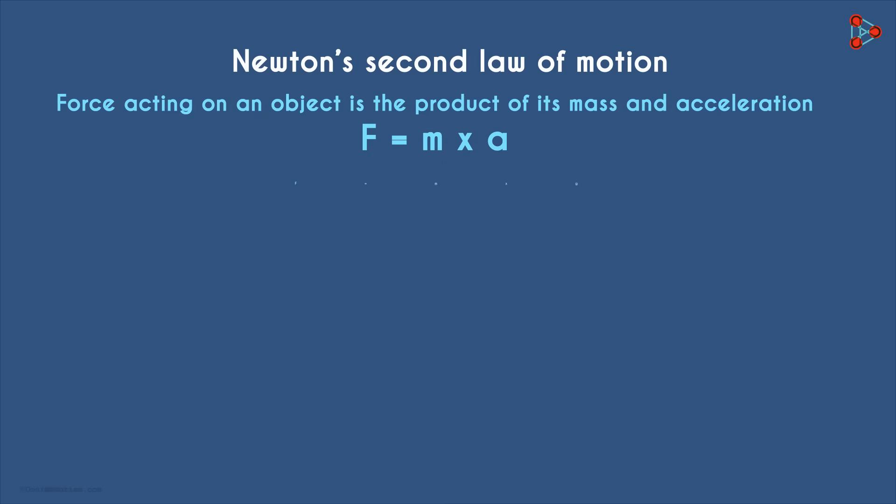When it's acceleration due to gravity, we can replace A with a lower case g. This force due to gravity is nothing but the weight of the object. So if we consider the weight of an object to be uppercase W, we can rewrite this equation as W equals M times g. So the weight of an object is the product of its mass and acceleration due to gravity.